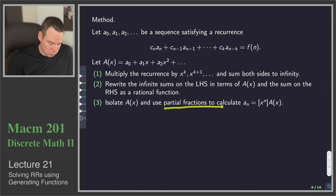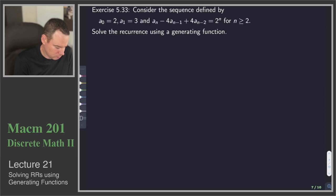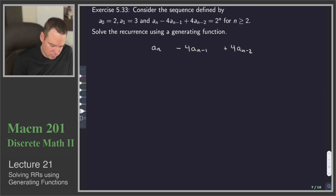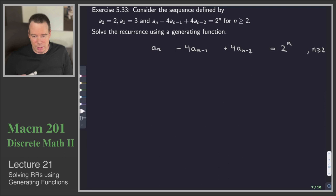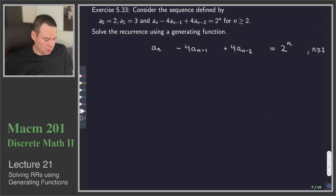Let's look at another example. We have the second-order recurrence: a_n - 4a_{n-1} + 4a_{n-2} = 2^n, for n ≥ 2. This represents infinitely many equations. We multiply through by x^n and sum.